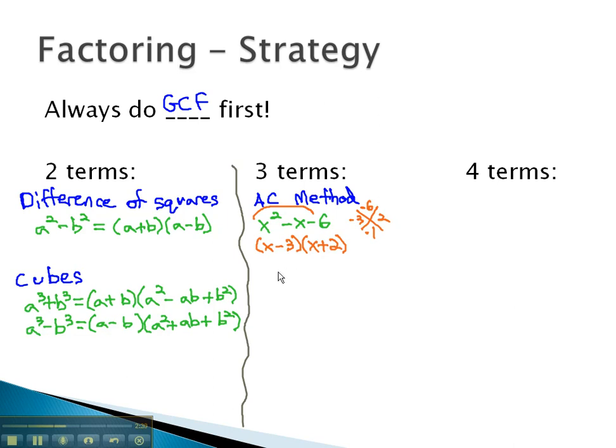Sometimes with the AC method, though, we discover we actually have a perfect square. These will be problems, such as x squared plus 10x plus 25. Using the AC method, we're multiplying to 25 and adding to 10. This will be 5 and 5, which are a perfect match. This tells us it factors to x plus 5 squared.